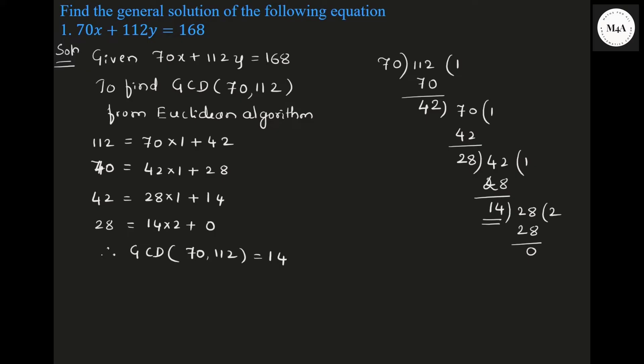In the first step, we need to find GCD. GCD of 70 and 112 is 14, found by the Euclidean algorithm using the last non-zero remainder. Once you find GCD, the next step for the Diophantine equation is to check whether it has a solution or not — to check that, we have to see if GCD divides C.